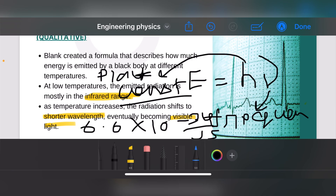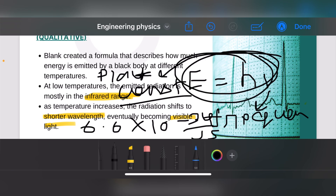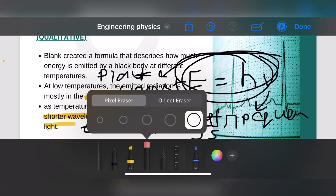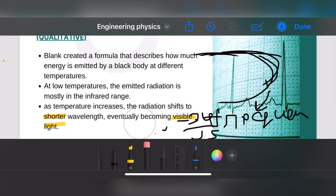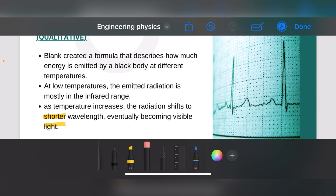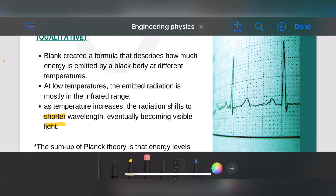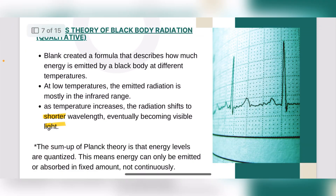Interestingly, regarding the E = hν formula, Planck also concluded that this energy of radiation — which he expressed in terms of frequency — was only an aspect of the process of absorption and emission of radiation. It had nothing to do with the physical reality of the radiation itself.